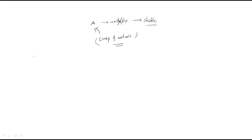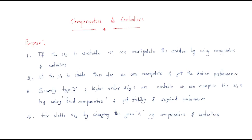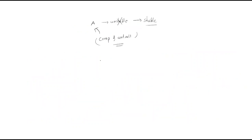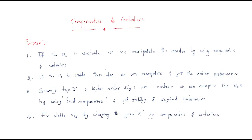If the system is already stable, we can still use compensators and controllers to get the desired performance. For example, if a system gives 5 volts output but we require 20 volts output, we can get the desired 20 volts output by using controllers and compensators.